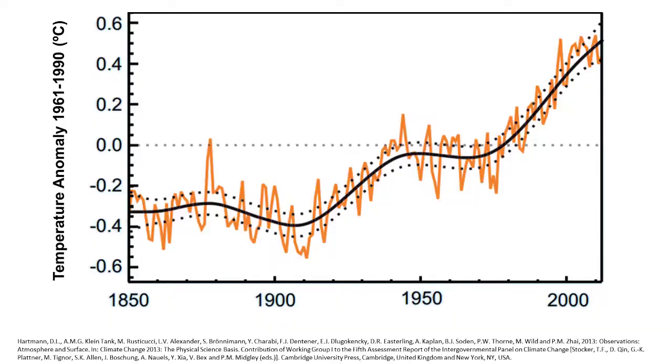So when we increase carbon dioxide concentrations, we by definition will increase the internal energy of the earth-atmosphere system, and that energy is increased through absorption, re-radiation, absorption, re-radiation, and eventually warming up the surface of the earth — and that's where we see the increase in temperature with time.